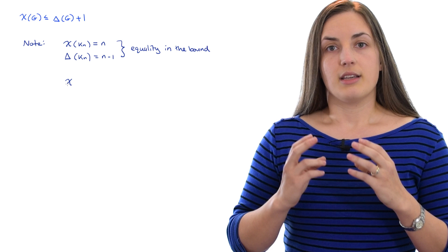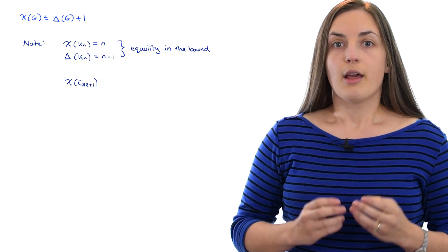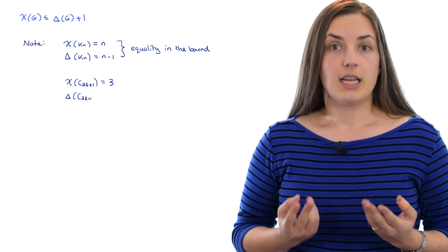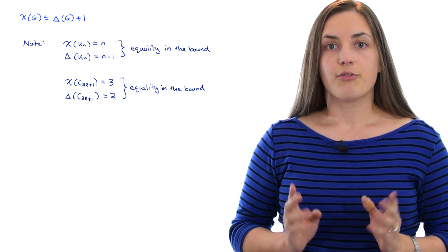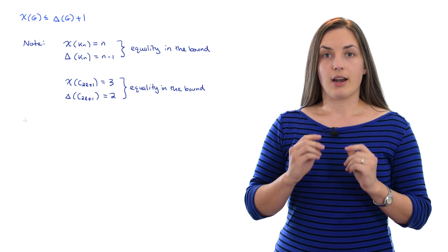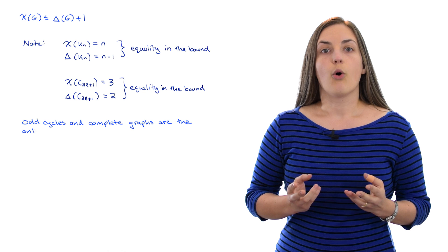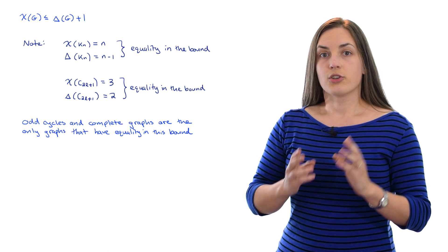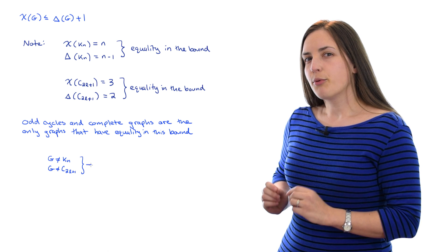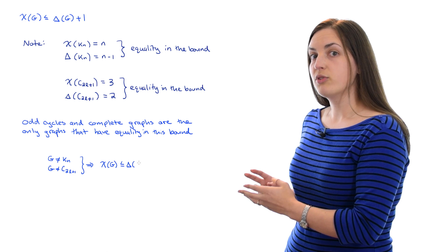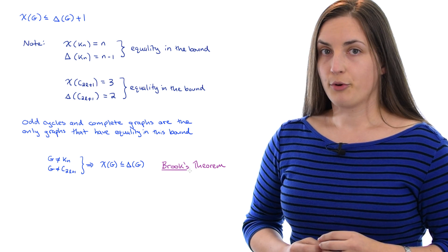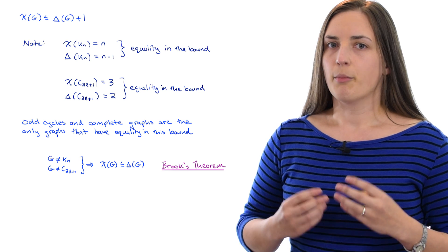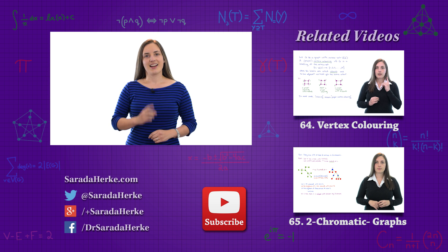Another example is the cycle on an odd number of vertices, which has chromatic number three but max degree two, so it also achieves equality in this bound. In other words, for a generic graph you cannot improve this bound. It turns out that odd cycles and complete graphs are the only examples of graphs which achieve equality in this bound — so if your graph is neither of those, you can improve the bound and say the chromatic number is at most the max degree. That's much harder to prove and it's known as Brooks' theorem, which we'll prove in a future video.